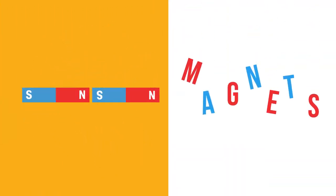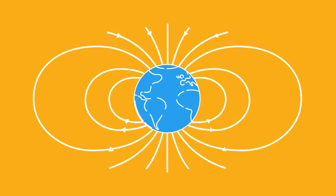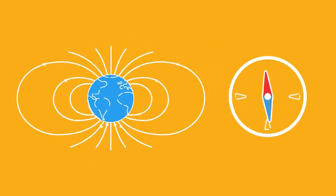Perhaps you've played with bar magnets or have a magnet on your fridge, but did you know that the Earth is a giant magnet? In fact, this is how compasses work.